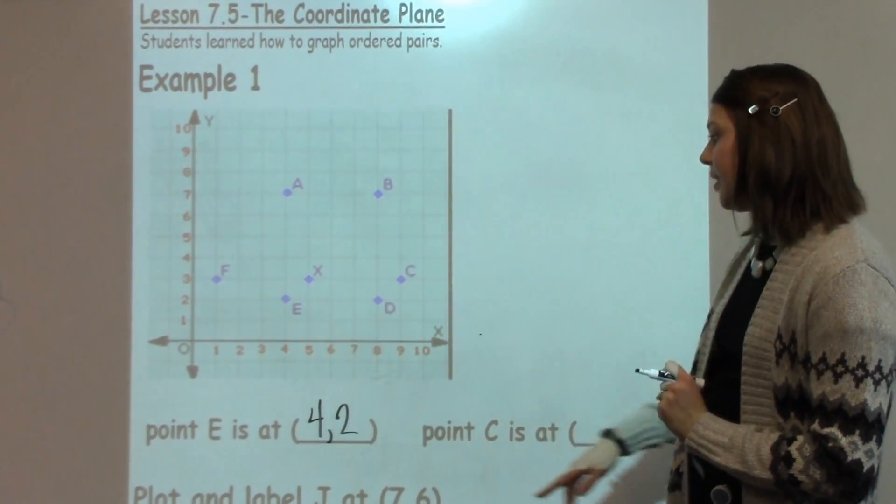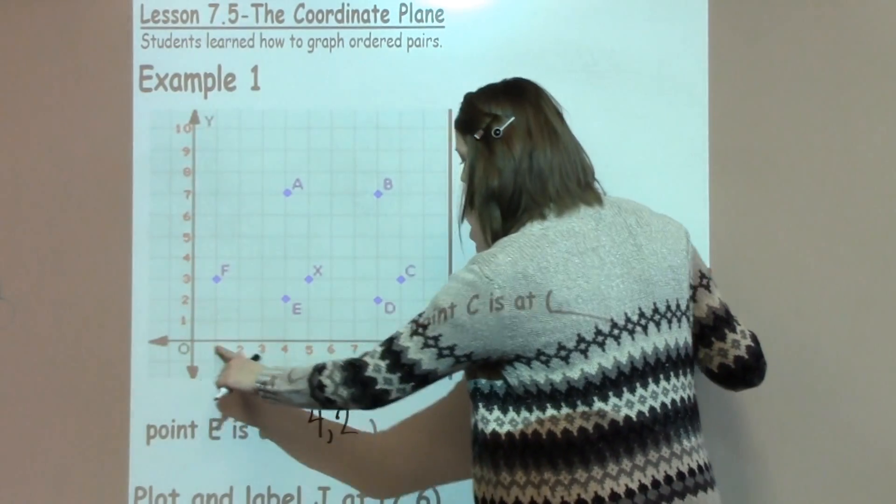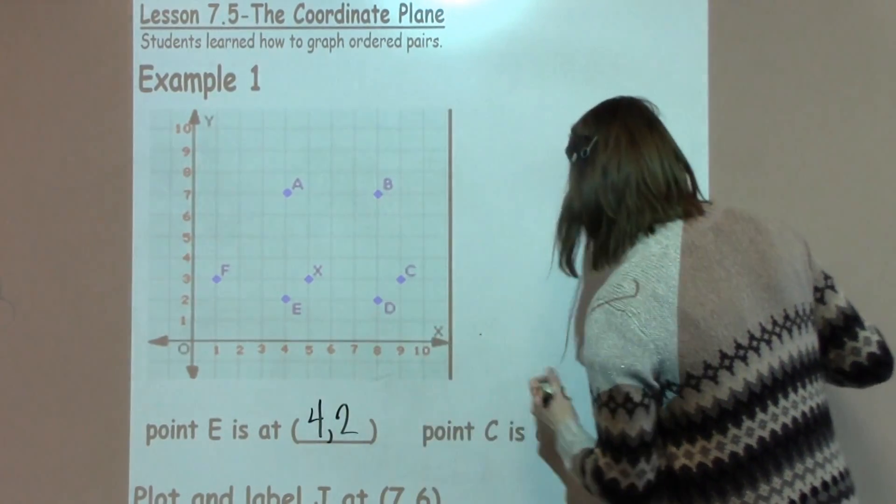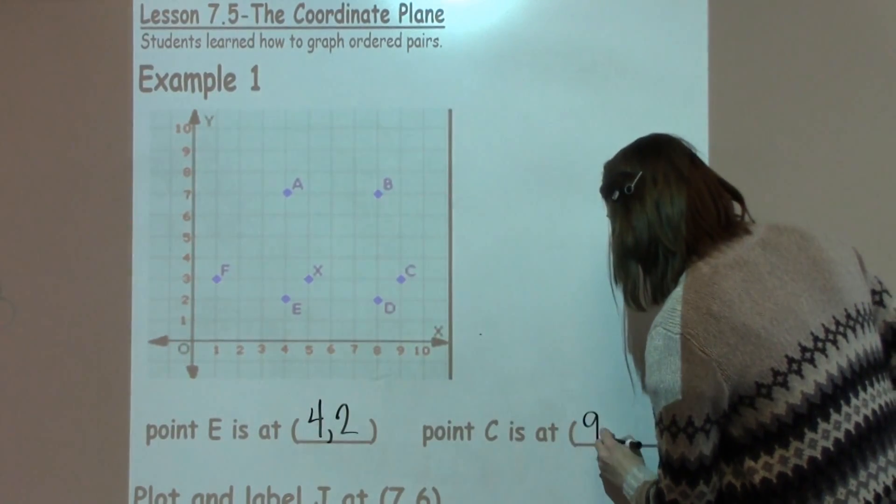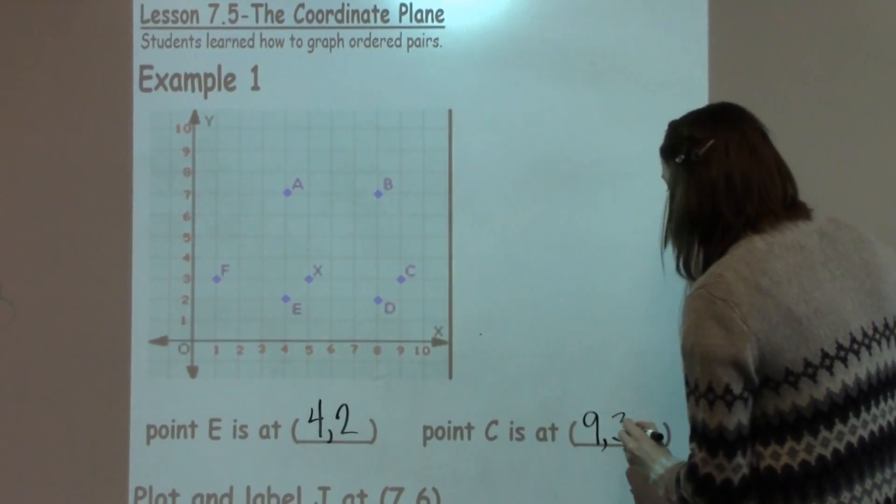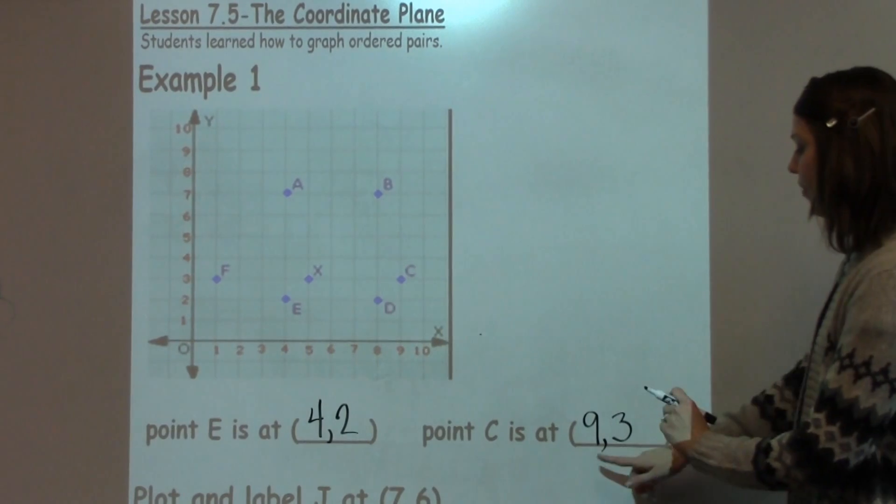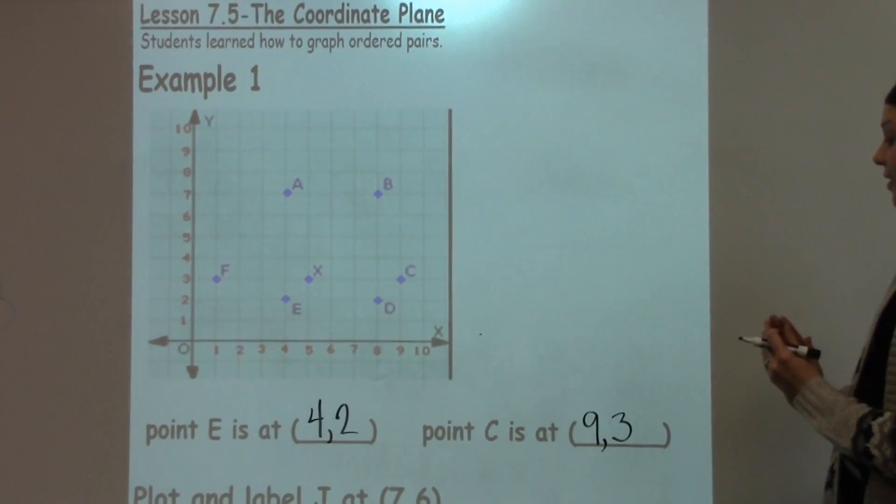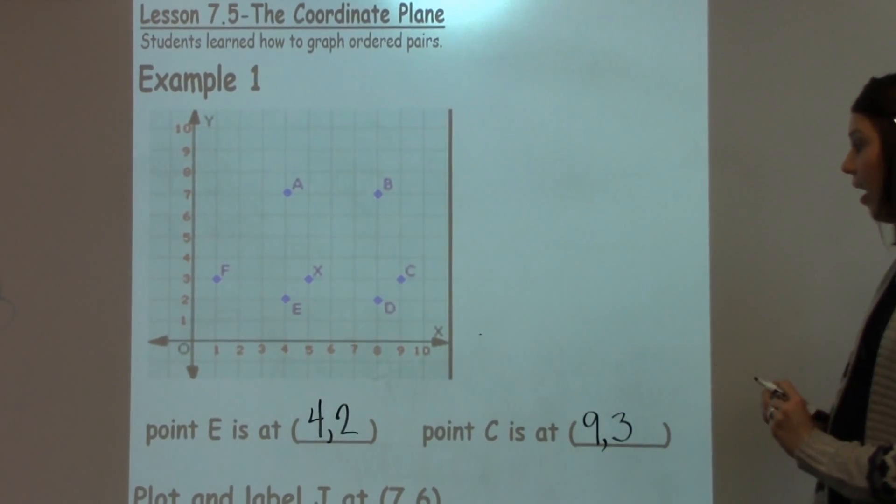Let's go ahead and try another one with point C. I'm going to go over 9. I'm going to go ahead and write down 9. And then I'm going to go up to 3. Again, notice with my ordered pairs, I put a comma in between to signal that this is a division between the x and the y.